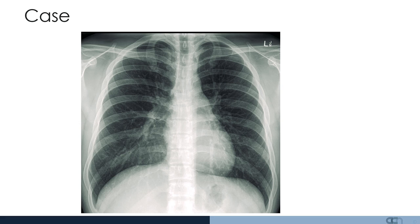Let's start by having a look at this normal chest radiograph. Start by determining the view. This is a standard posteroanterior view where the patient is standing approximately six feet from the beam and the source is coming from the back of the patient through to the front.